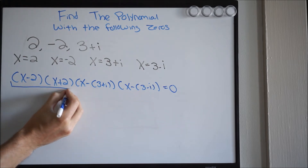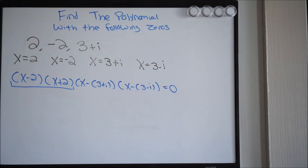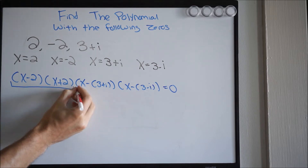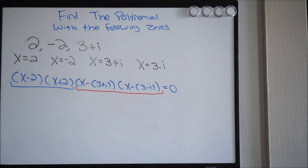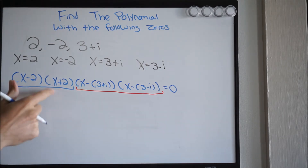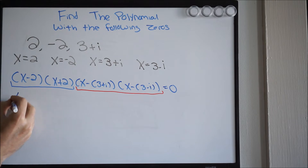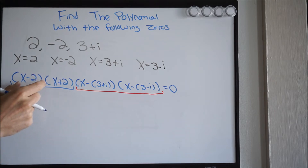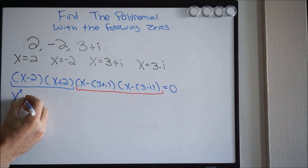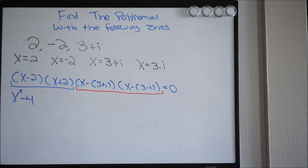You want to break this up into parts. We're going to work on the first part (x minus 2)(x plus 2), and then we're going to work on the complex factor part, and then multiply the two results together. The first part is a difference of two squares — when we FOIL, we get x squared, the outside and inside terms cancel, and we're left with x squared minus 4.